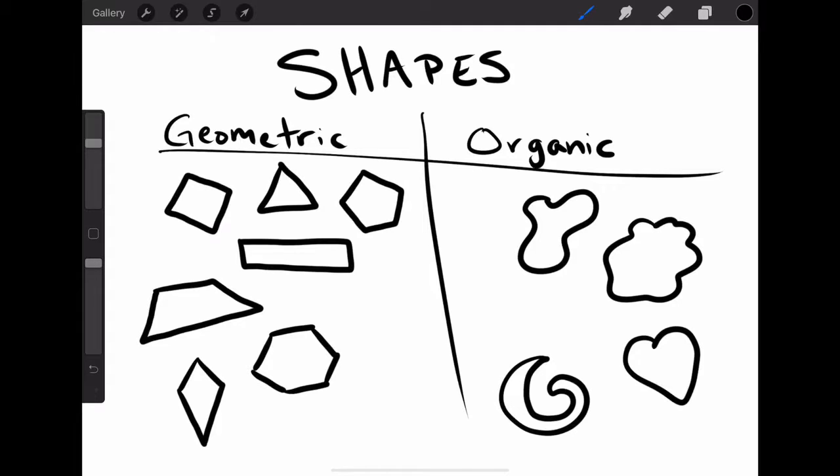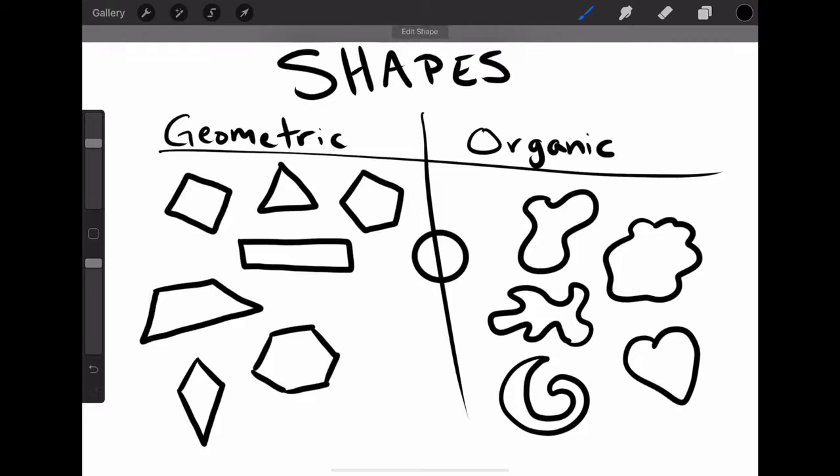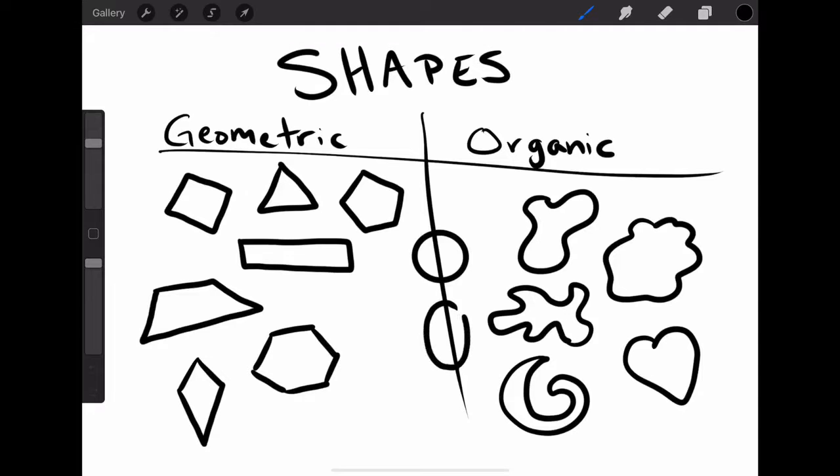Now you may have noticed there are two shapes that we see all the time that I didn't put down. That's because they are both geometric and organic. These two shapes are the circle and the oval. They count as both geometric and organic because they're defined by math but we see them out in nature all the time. These two different types of shapes have different sorts of purposes in the art world.